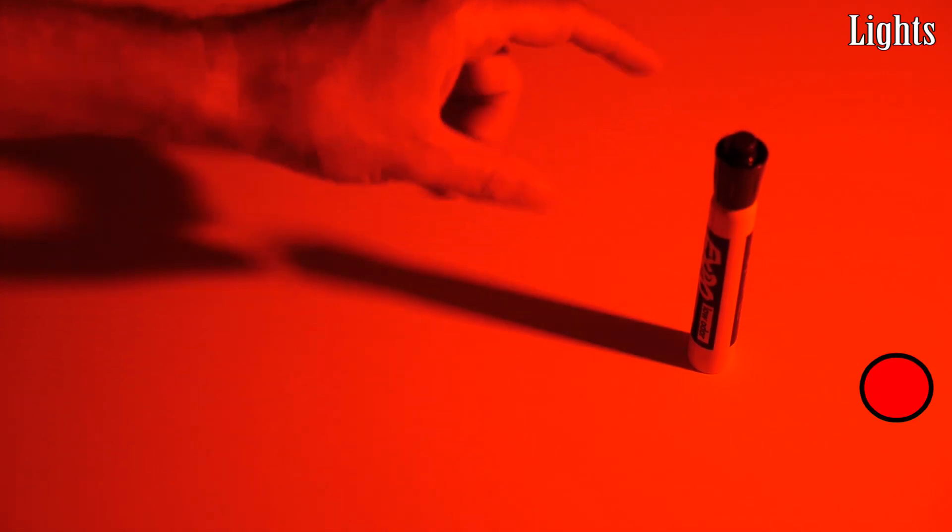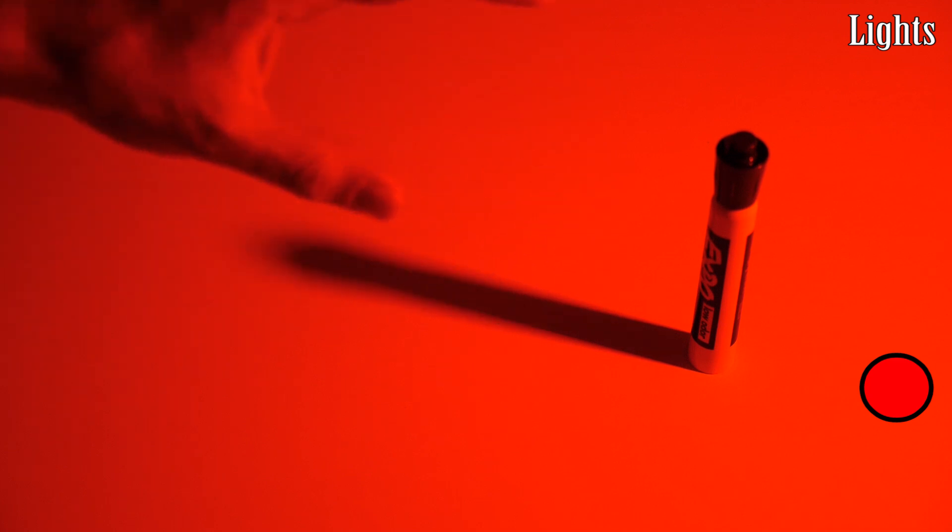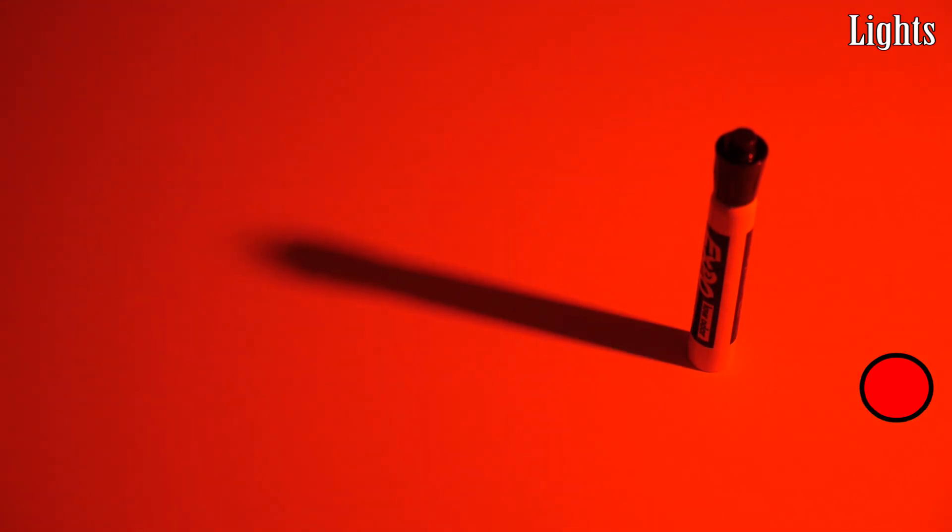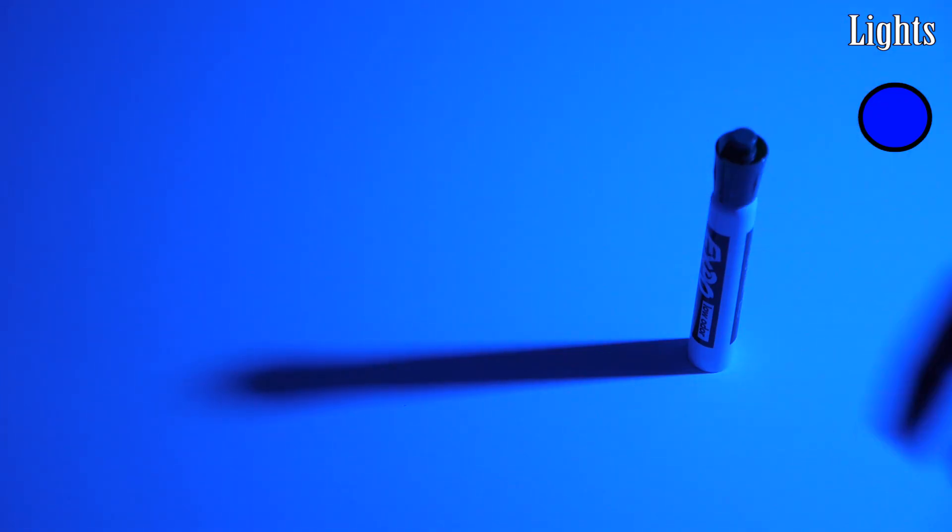But in this video I want to take it even further and describe black as not only a shade of white, but actually just a shade of any color. In fact, black is just less of whatever's around it. So for example, this shadow looks black with red light, it looks black with green light, and it looks black with blue light.